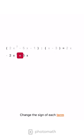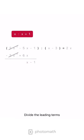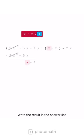Change the sign of each term, now add the polynomials, divide the leading terms, write the result in the answer line.